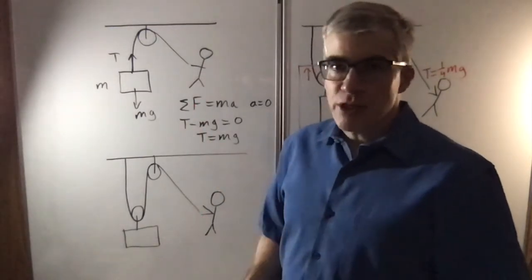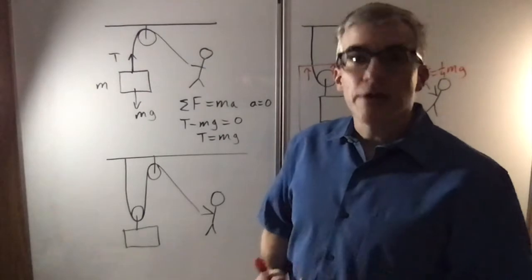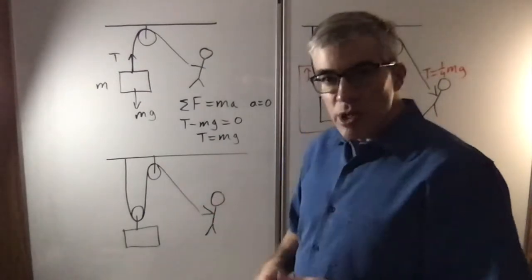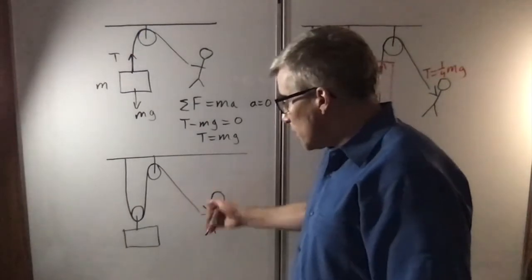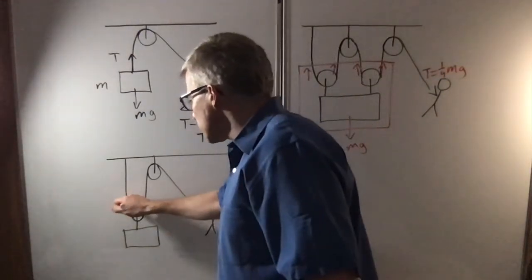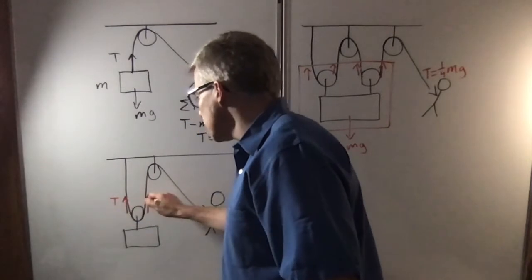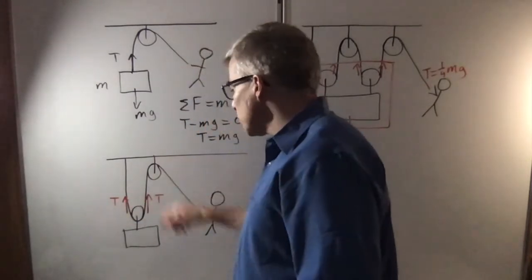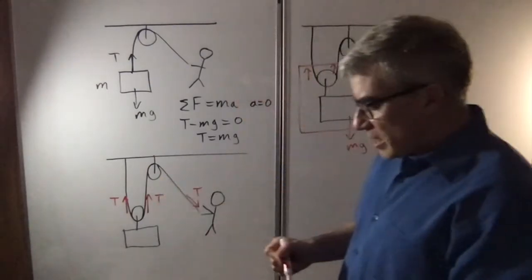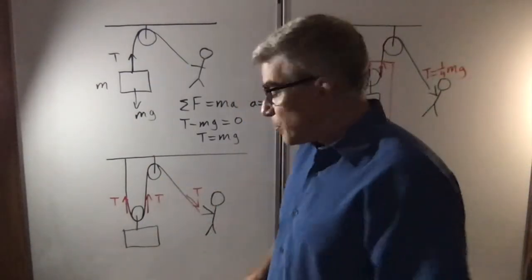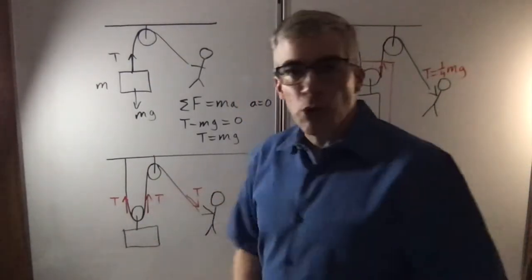So if you want to get mechanical advantage more than multiplying by one, then you need to use more than one pulley. So if we have two pulleys here, you pull on this rope, and the mass is pulled here and here. This is tension. This is tension. If these pulleys are frictionless, for simplicity we assume that, then all of the tensions are the same, which means you only have to pull with half the weight.